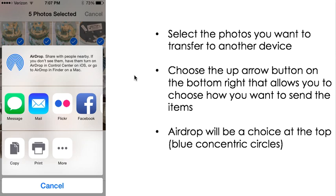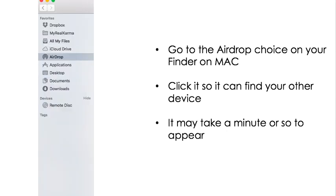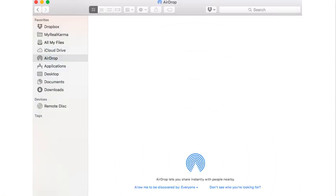But before you can do that, you've got to get your two devices talking to each other, and that takes just about a minute. You're going to go to the device that you want to transfer your items to. If you're on a Mac or sending to an iPad, you should have AirDrop as one of your features in your Finder. You can see here it's right there near desktop applications and that kind of stuff, and it may take a minute or two to find the device.